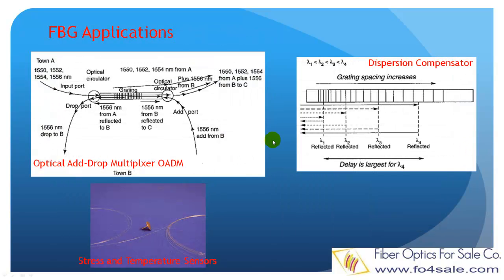Fiber Bragg gratings have many applications in modern fiber optic communication systems. They have been used as optical add-drop multiplexers, dispersion compensators, and stress and temperature sensors.